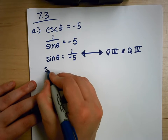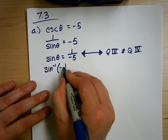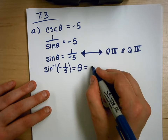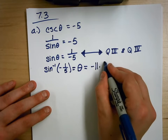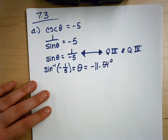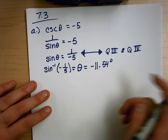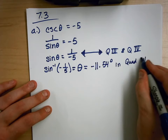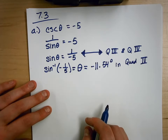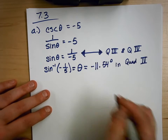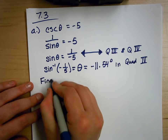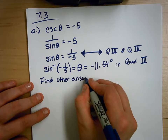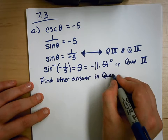Now I'm going to take sine inverse of negative one-fifth. When I plug that into my calculator it's going to give me negative 11.54 degrees. Negative 11.54 degrees is in quadrant 4, so I need to find the other answer that's in quadrant 3.